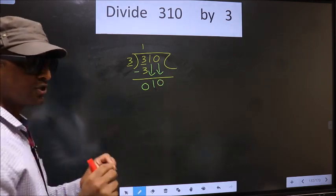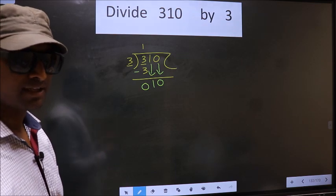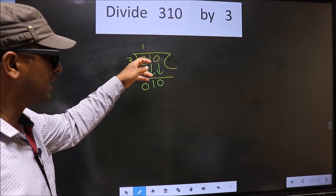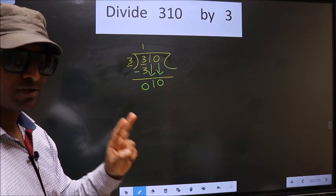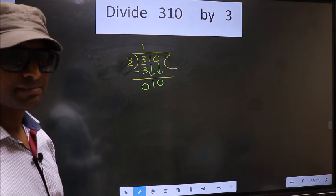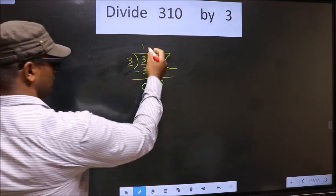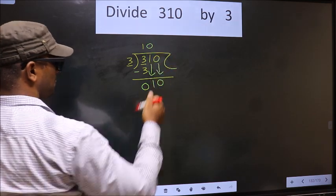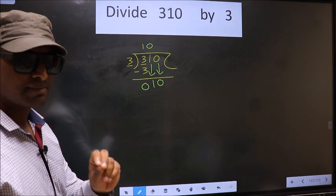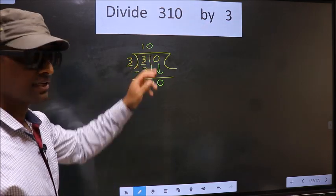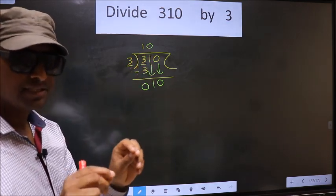Over here, you should remember this point: whenever you are bringing down 2 numbers, at the same time, compulsory, you should put 0 in the quotient. I repeat: whenever you are bringing down 2 numbers, compulsory, you should put 0 in the quotient. Remember this point.